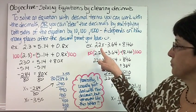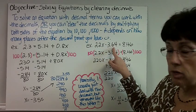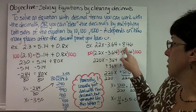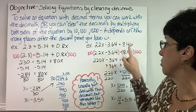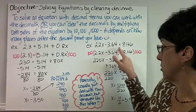Let's do one more. Example: 2.2x minus 3.64 equals 8.46. So once again, here's one place past the decimal, here's two places, here's two places. So we need to multiply by 100 to get rid of all of our decimals.